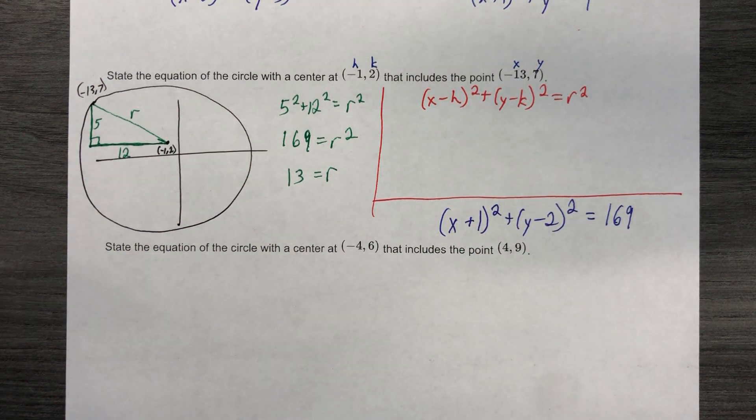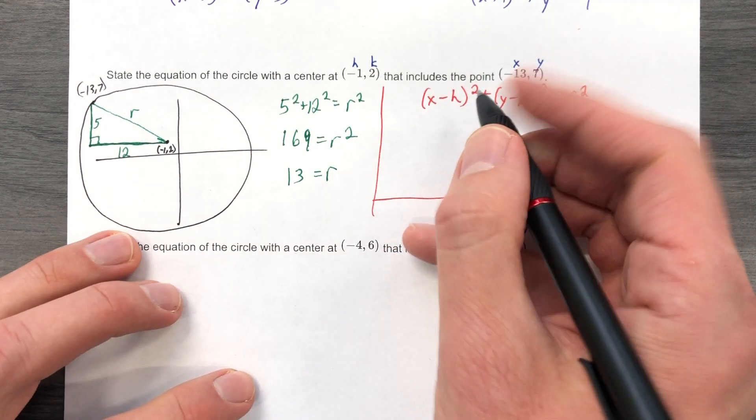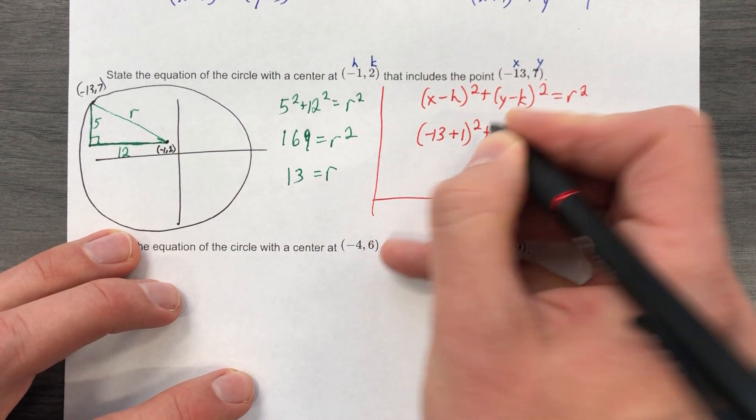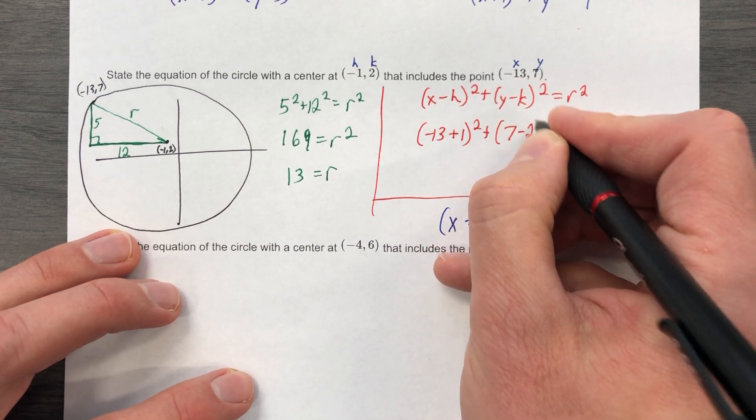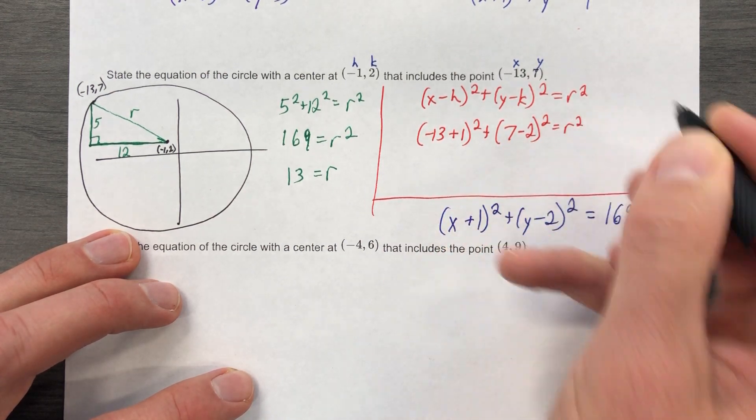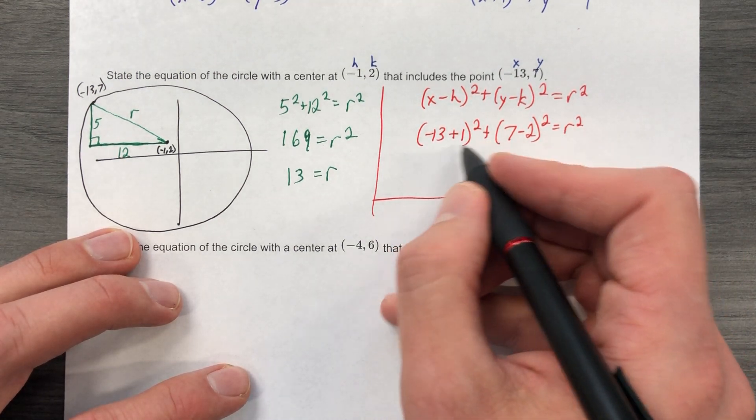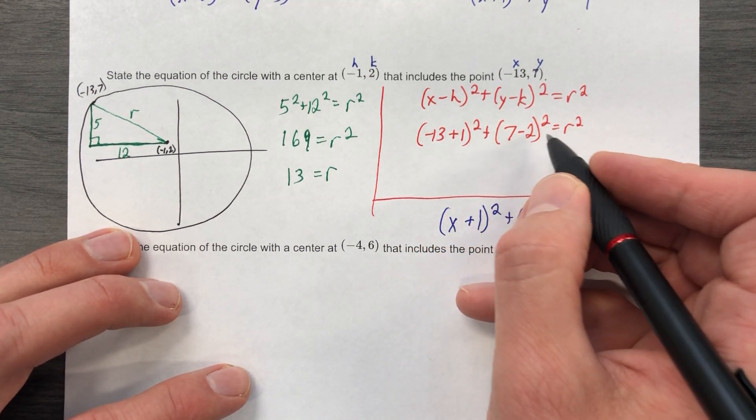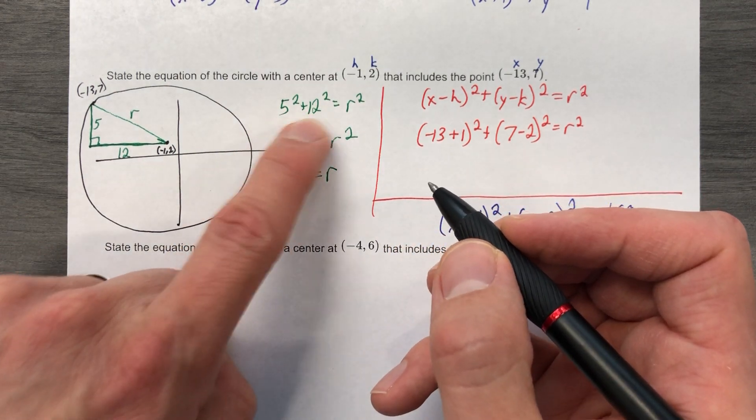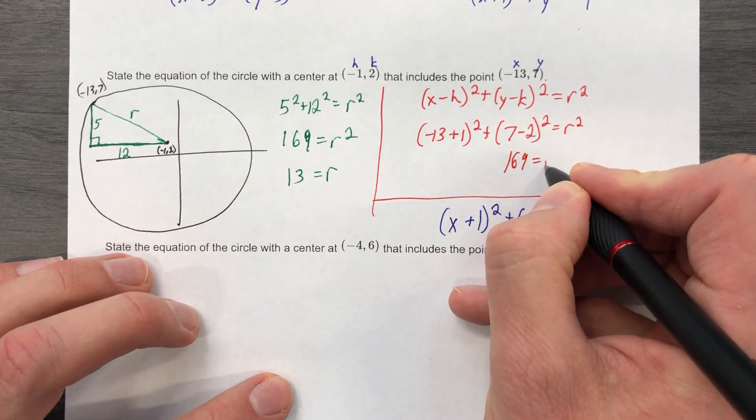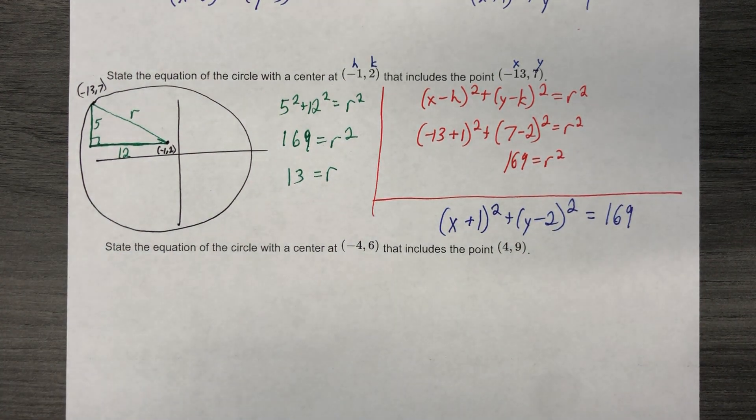Some people like this method better. So here goes x minus h. Negative 13 minus negative 1 squared. And then y minus k, seven minus two squared equals r squared. Crank all that out. That's negative 12 squared, that's 144. That's 5 squared, that's 25. It's looking the same at this point. 12 squared, 5 squared. That's 169 equals r squared. It's another way of doing the exact same thing.